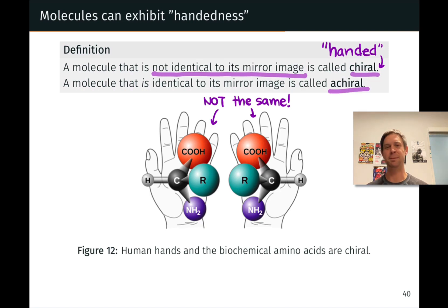In chemistry, we give it a bit more of a formal term. It's called chiral. Chiral means handed and chirality is the property of handedness. A molecule that's not identical to its mirror image is called chiral or handed. Many molecules are identical to their mirror images. These are called achiral. They lack this property of being handed.